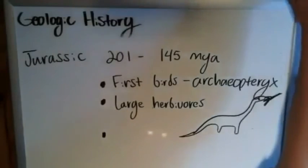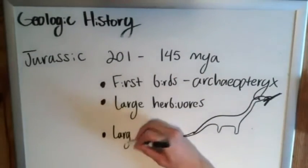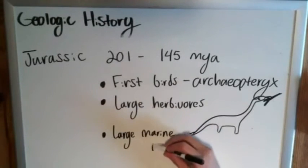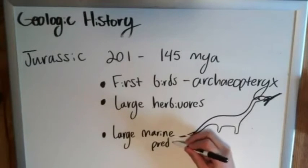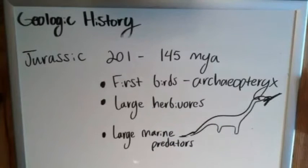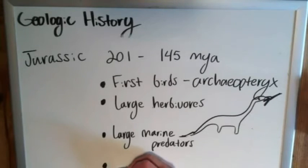After the large herbivores, we also see the development of large marine predators. This refers specifically to reptiles. We had things like the Mosasaurus, the Plesiosaurus, the Ichthyosaurus — those sort of well-known giant marine carnivores. And finally, this is the period in which Pangaea begins to break apart.